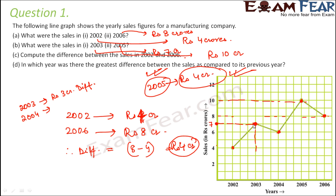To confirm: you need to find the year where the increase in sales compared to the previous year is the maximum. From 2004 to 2005, sales increased by rupees 4 crores, which is the maximum difference when compared to all other years.